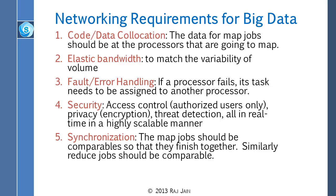Third is fault and error handling — we keep the data on three different nodes and the computation on three different nodes, so if anything fails the job is still complete. Fourth is security — with VLANs and other mechanisms, only authorized users can get access to the data. Fifth is synchronization: Map jobs need to be comparable. When you divide the jobs, you want to make sure they are all similar in size, because if one job takes a day and others finish in a few hours, the reduce jobs are just waiting and cannot reduce efficiently.